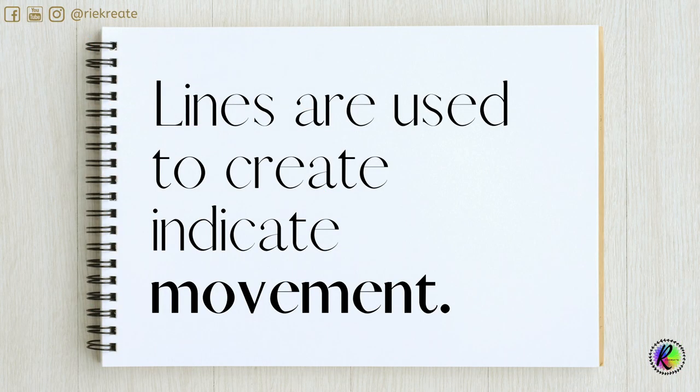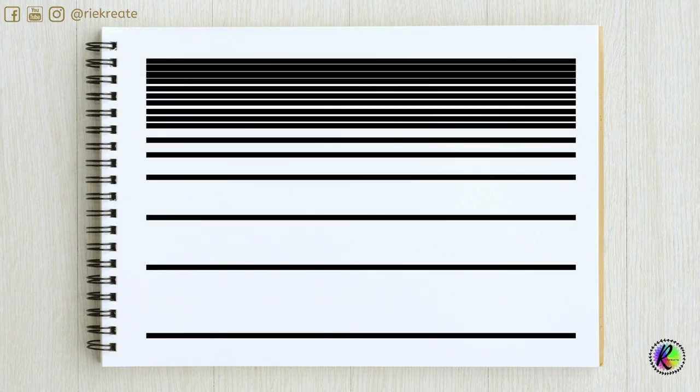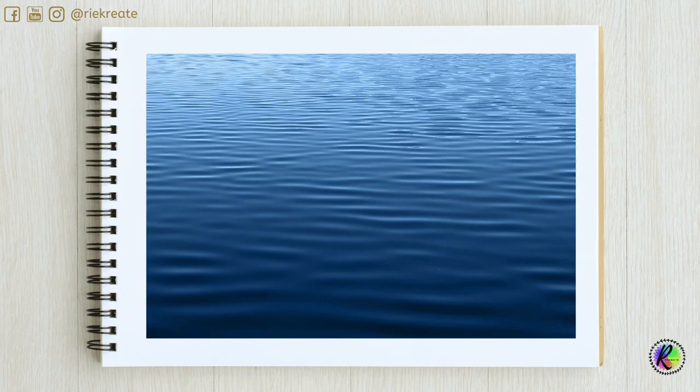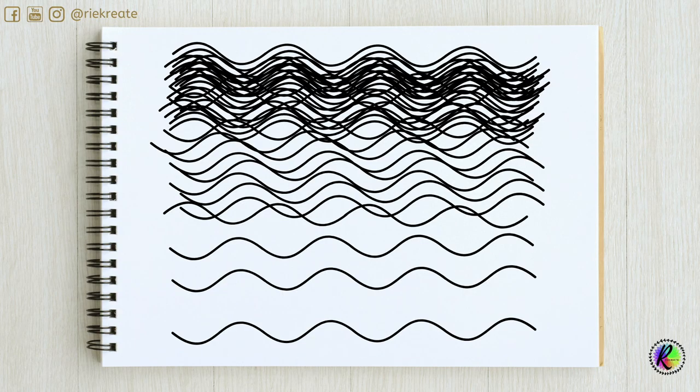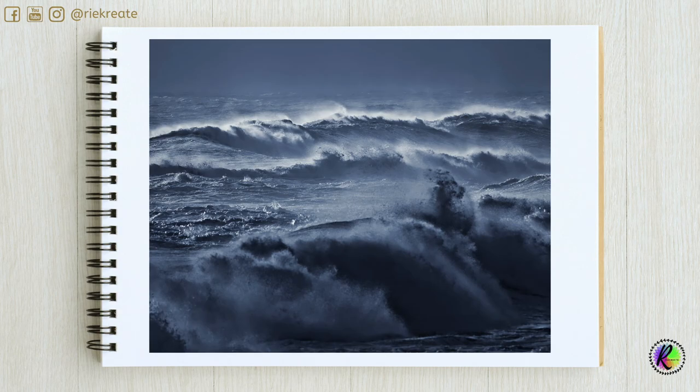Lines are used to indicate movement. This is an example of the sea — the straight line suggests that the sea is calm, whereas the curvy line suggests that the sea is rough.